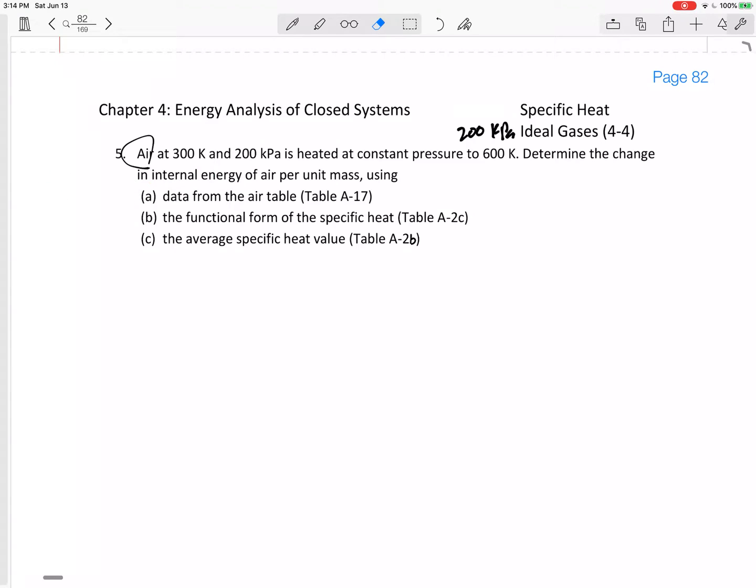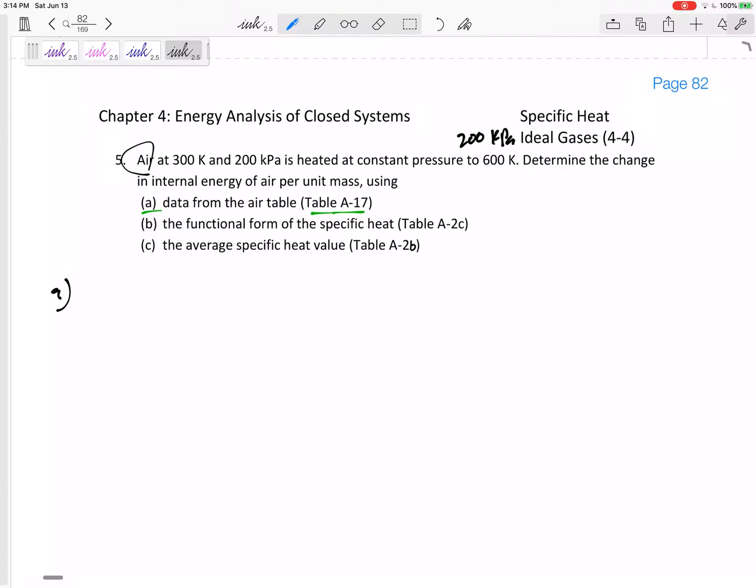First of all, could we find it from the air table, Table A17? We haven't used these tables before, but if we go to our property tables, go for Table A17. State one is at a temperature of 300 Kelvin, a pressure of 200 kPa.